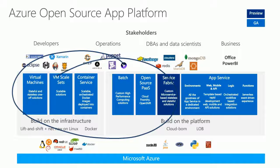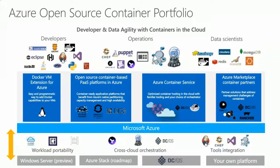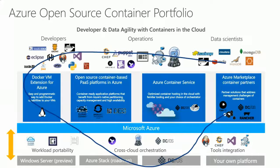Let me give you another example: the container portfolio. You can attach an extension to an existing VM to provision Docker. You can use a readily available container-based PaaS platform. You can start from scratch with an Azure Container Service that gives you a choice of orchestrator. You can go to Marketplace and choose many container partners. Containers also bring a hybrid aspect — you can move container workloads across public and private environments. All of the solutions we have in the container space in the public cloud today are around Linux, and in partnerships with Mesosphere for DCOS, you're going to see more and more Linux support for the container portfolio.